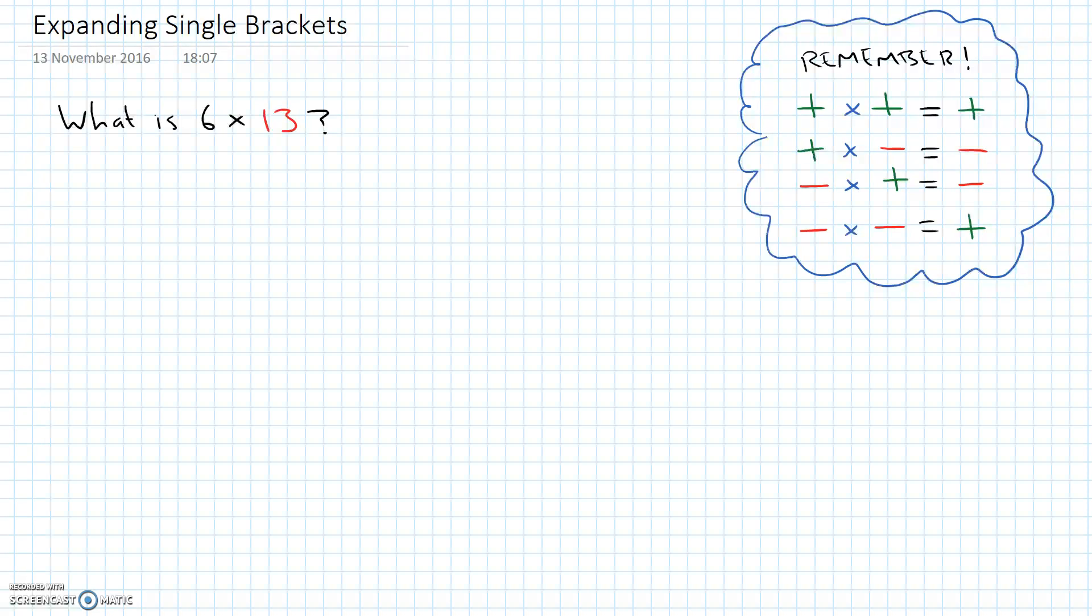You might be able to do it straight away in your head. But if you're struggling, one of the things you might think of doing is saying, well, we could take the 6 times 13 and we could break down that number 13 or partition that number 13 into two parts. We could say that 13 is made up of a 10 and 3 units, a 10 and a 3. And then we could rewrite our question as what's 6 times 10 plus 3.